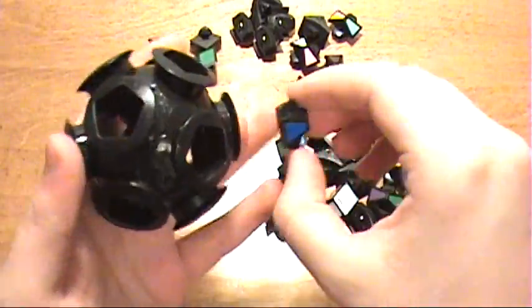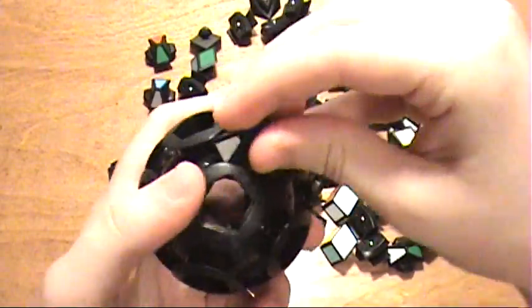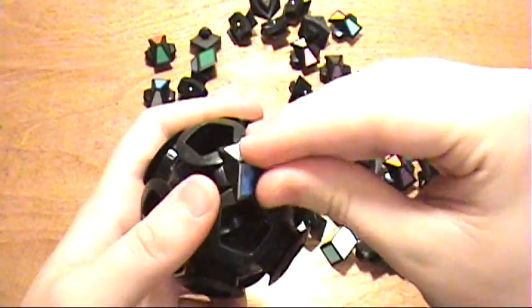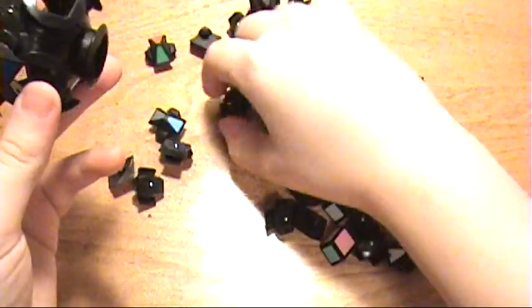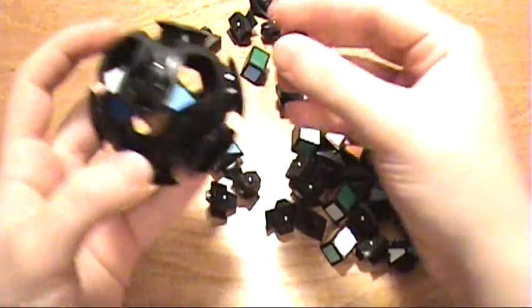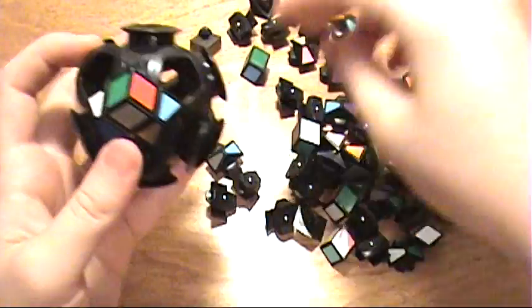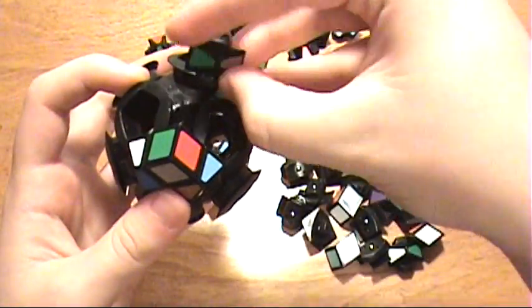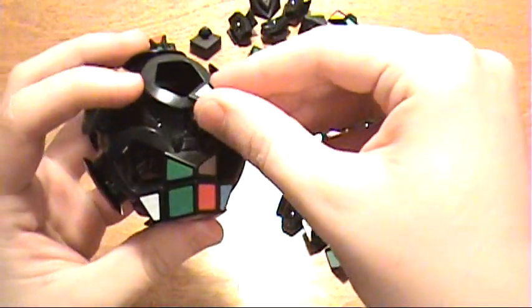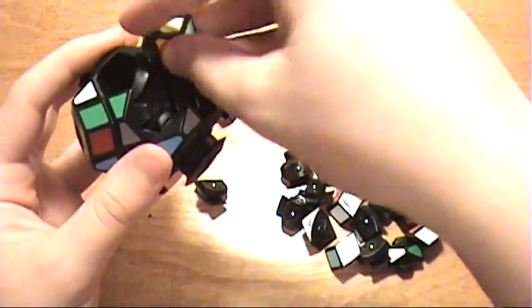To do that, just take an edge piece and fit it in between two of these round centers. Take another one and fit it in between two other centers. Take a corner and stick it in there. Take another edge piece and stick that in there. You just continue doing this until the last few pieces, and then I'll show you what to do next.